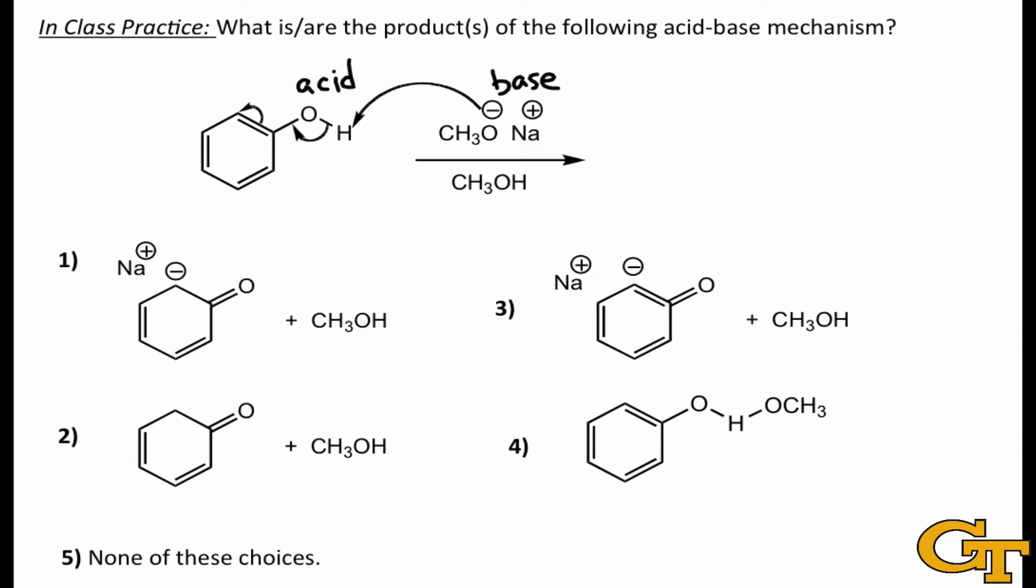And the question asks, what are the products of the following acid-base mechanism? Curved arrows are given, so the curved arrows are showing us how electrons move.